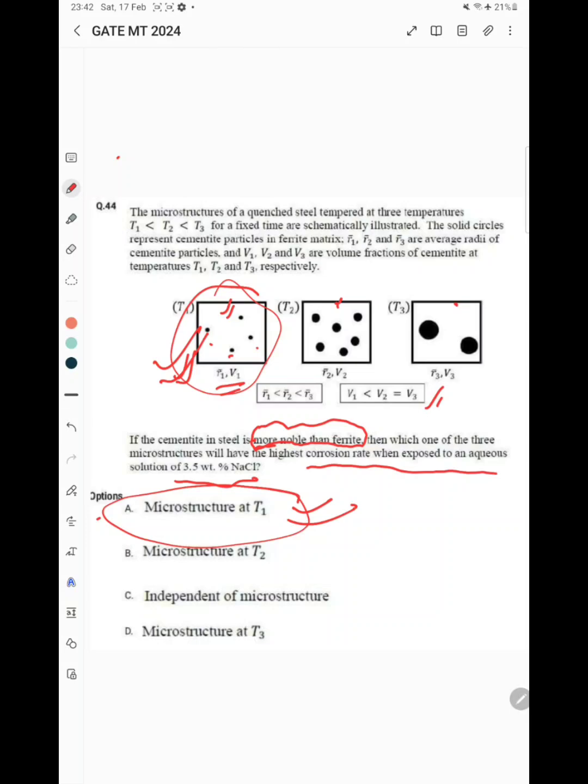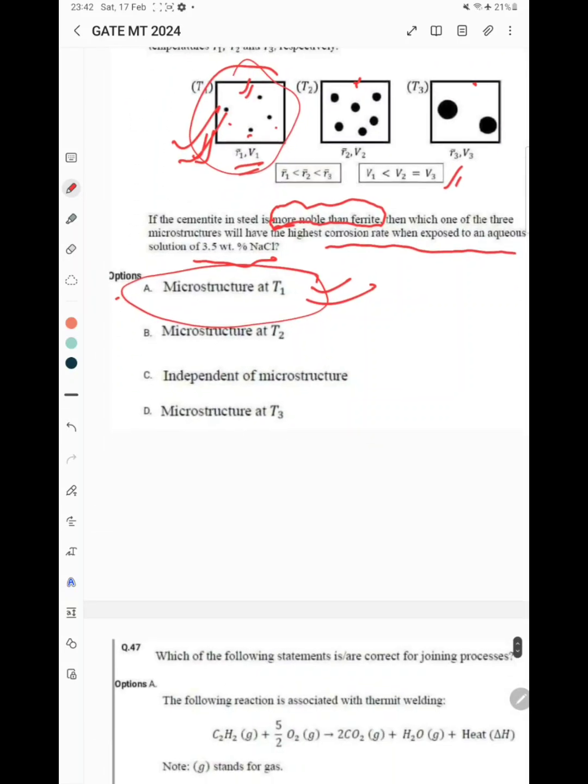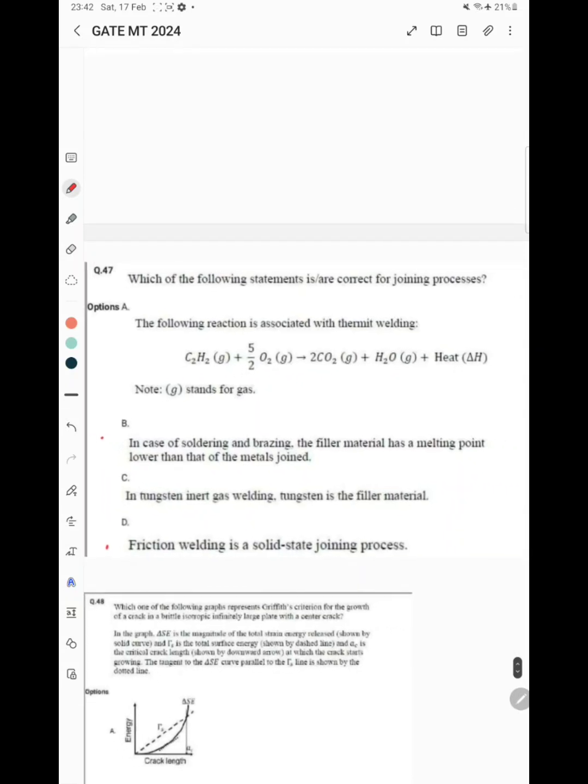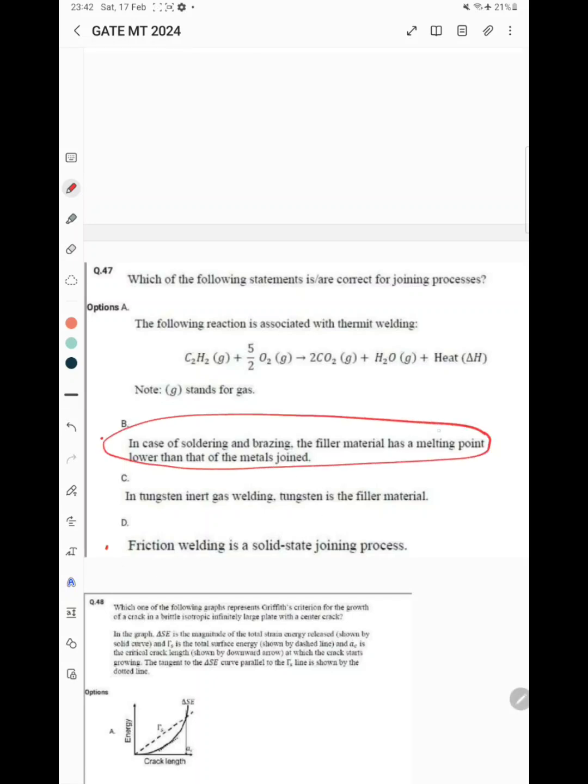Now the next question: which of the following statements are correct for joining processes? In case of soldering and brazing, the filler material has a melting point lower than that of the metals being joined - this is correct. Friction welding is a solid-state joining process - this is correct. The other two are false.